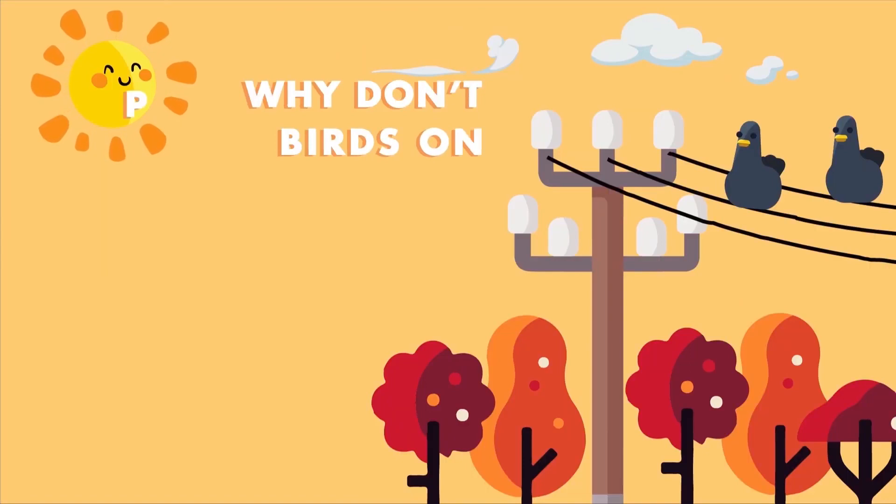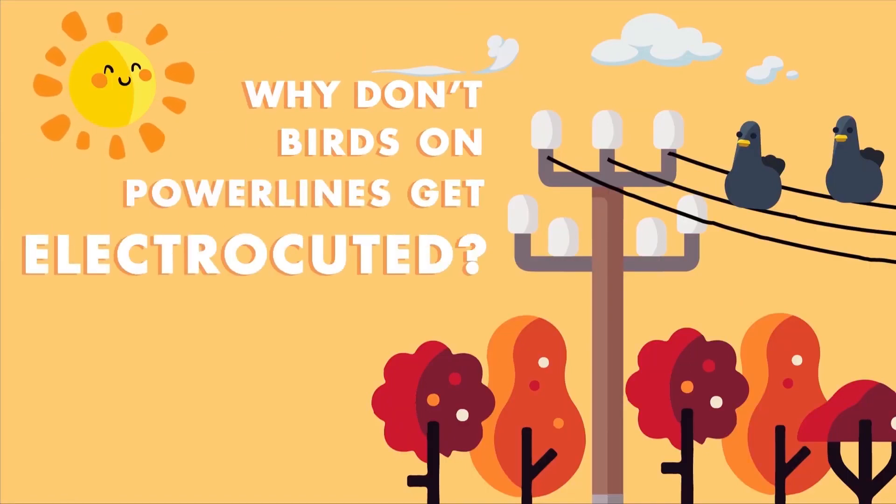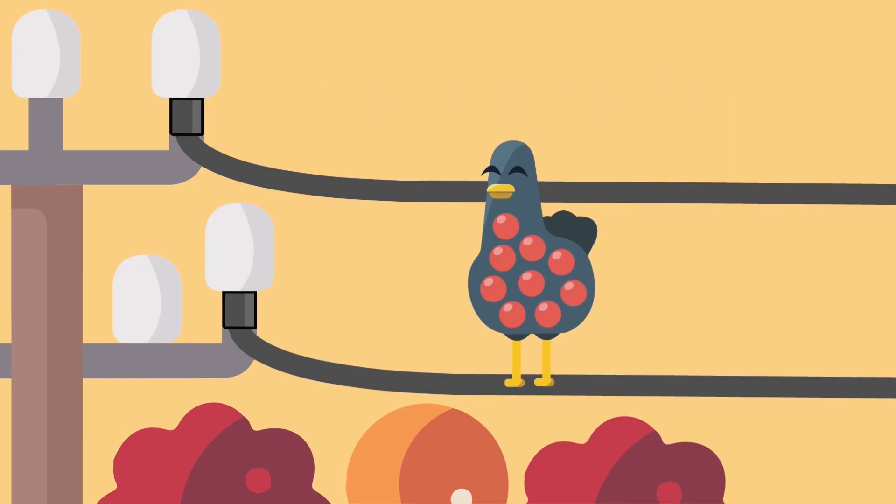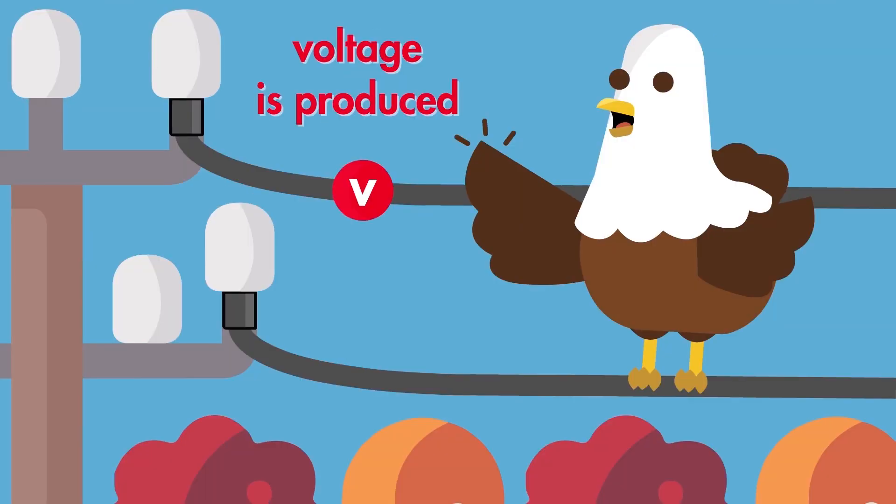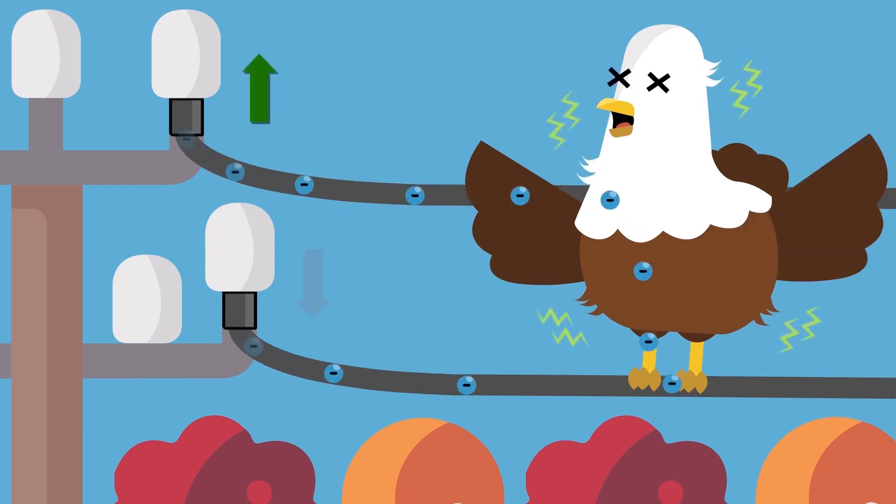Why don't birds sitting on a power line get electrocuted? If a bird sits on just one power line, it is safe. However, if the bird touches another line with a wing or a foot, it creates a circuit, causing the electricity to flow through the bird's body. This results in electrocution.